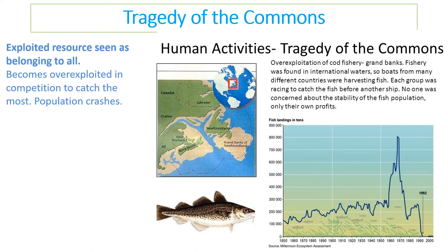This leads to something called the tragedy of the commons — when there is a resource that people think is common to everyone, like common land, everyone exploits it and it becomes over-exploited. Cod is a very good example: cod, which would have been found across the whole North Atlantic earlier in the 20th century, is now critically endangered.